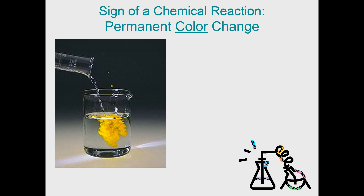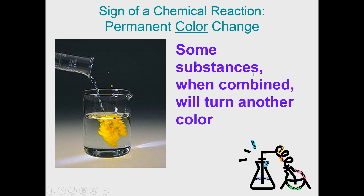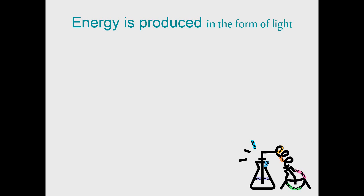Another indication of a chemical reaction is a permanent color change. In this example, you have a clear liquid from a graduated cylinder added to a clear liquid in a beaker, and when mixed together you see an opaque, new-colored substance. This is not only a permanent color change but also an example of a precipitate — here a yellow precipitate — being formed.